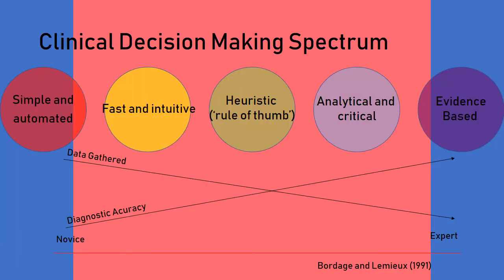Clinical decision making exists on a spectrum from simple and automated processes that allow you to make a very quick decision based on potentially a small dataset — a small amount of information from your patient — all the way through to heuristics or rules of thumb. Toward the far end of the spectrum, we've moved from very simple automated processes allowing intuitive and instinctive thinking, to acting more analytically and being very aware of how we interpret available data to reach a more evidence-based, structured conclusion.